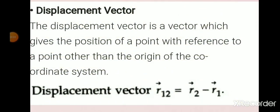Displacement vector. We have already studied the term displacement, which is the shortest distance between the initial and final points. The displacement vector is a vector which gives the position of a point with reference to a point other than the origin of the coordinate system.